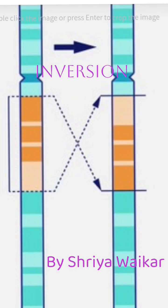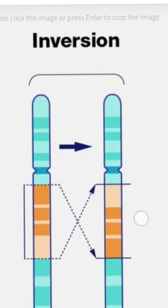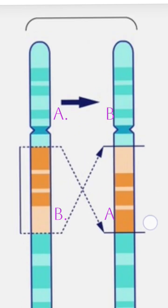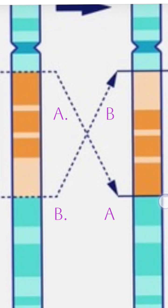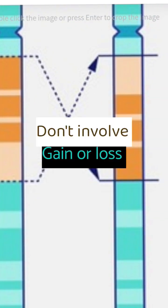Today we are going to learn about chromosomal inversion. An inversion occurs when a chromosome segment breaks at two points, flips 180 degrees, and reattaches in inverse order. This reversal changes the gene sequence but does not involve gain or loss of genetic material.